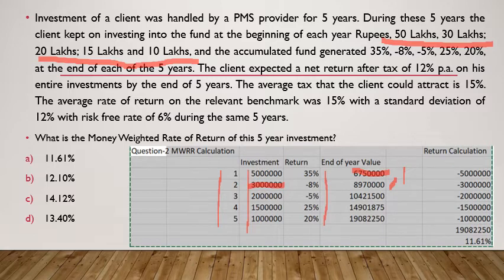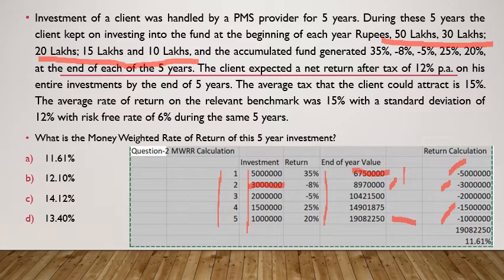Once you have all these year-end values, you will arrive at the fifth year-end value. After reaching this value, you calculate the return by writing the cash flows: minus 50 lakhs, minus 30 lakhs, and so on down to minus 10 lakhs, representing the five investments made. The final value realized is the fifth year-end value. You then use the IRR function in Excel. Using the IRR function, you will get the answer of 11.61%, which is the money-weighted rate of return.